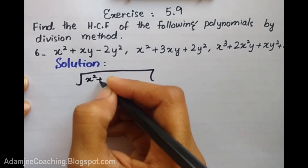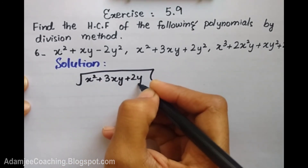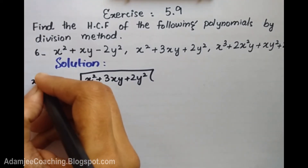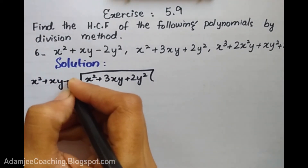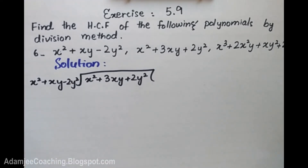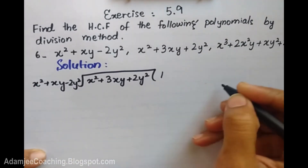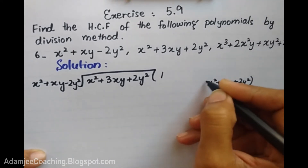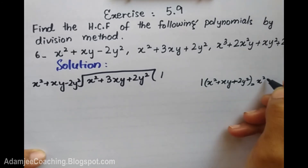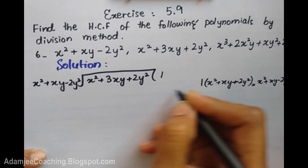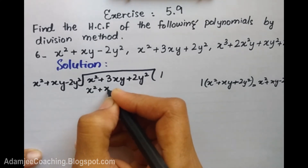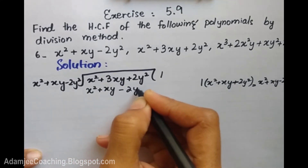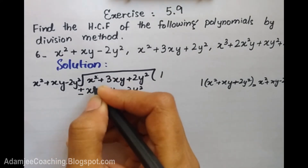In the division box, the dividend is x² + 3xy + 2y² and the divisor is x² + xy - 2y². I divide x² + xy - 2y² into x² + 3xy + 2y². Since both have x², I multiply the divisor by 1 and change the sign, getting minus x² minus xy plus 2y². Plus and minus cancel.